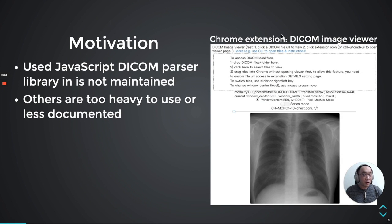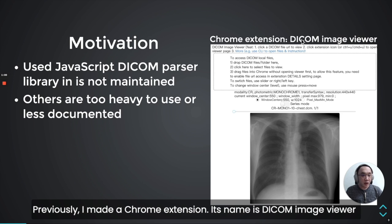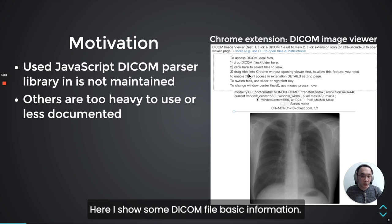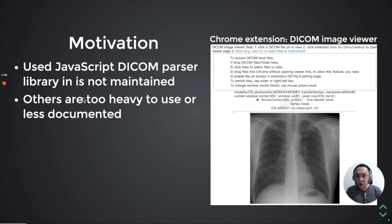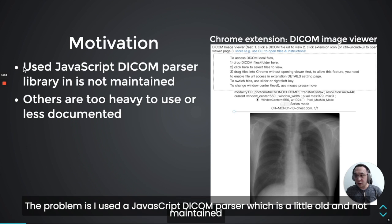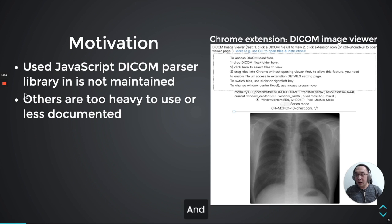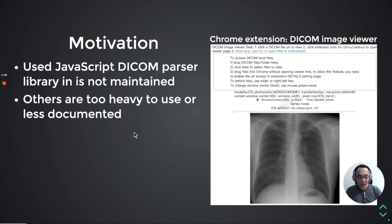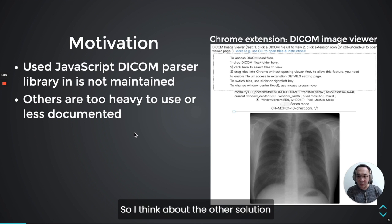Motivation. Previously, I made a project called Daikon Image Viewer. Here I show some Daikon batching information, and this is a Daikon image. The problem is I used a JavaScript Daikon parser which is a little old and not maintained. And also other JavaScript libraries are too heavy to use or less documented. So I think about other solutions.